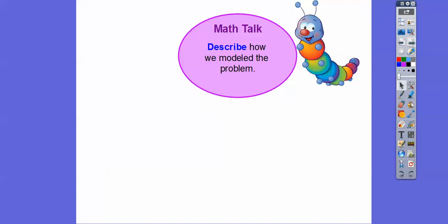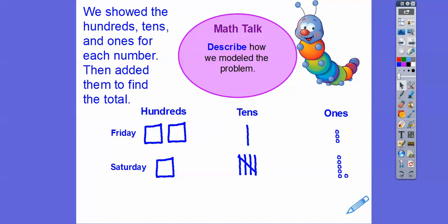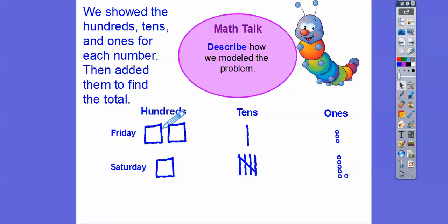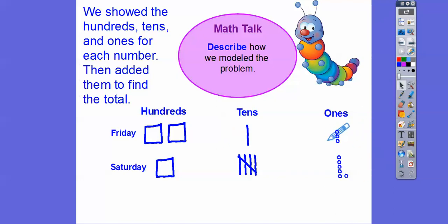So describe how we modeled the problem. We showed the hundreds, tens, and ones for each number, and then we added them to find the total. So here's the 200, and this is one ten and three ones — so 213. Here's the 100, and this is five tens and six ones — so 156. So when we add them together, there's 300, there's 60, and there's nine of these guys together. So it gives us 369.